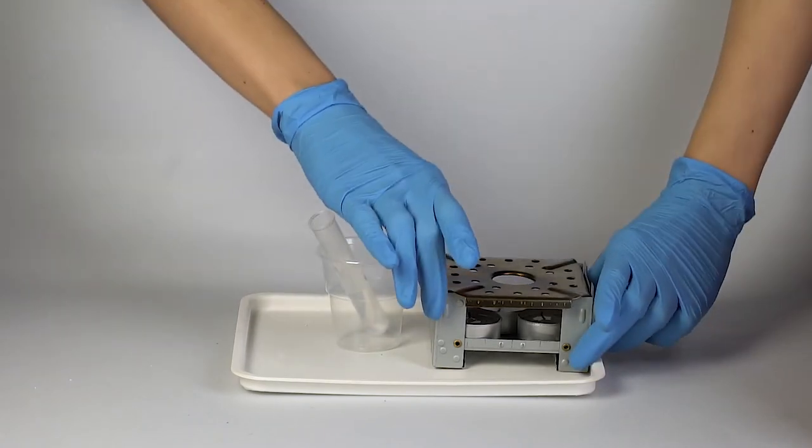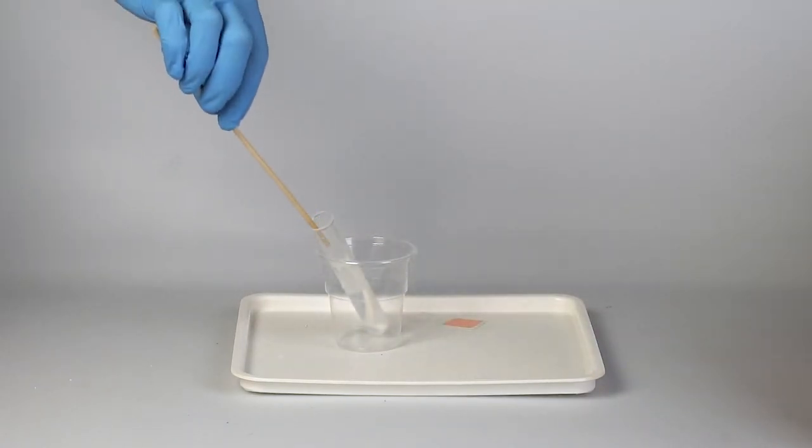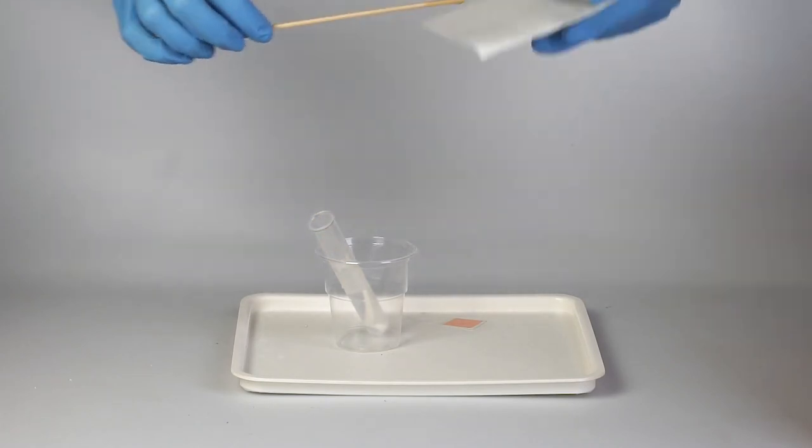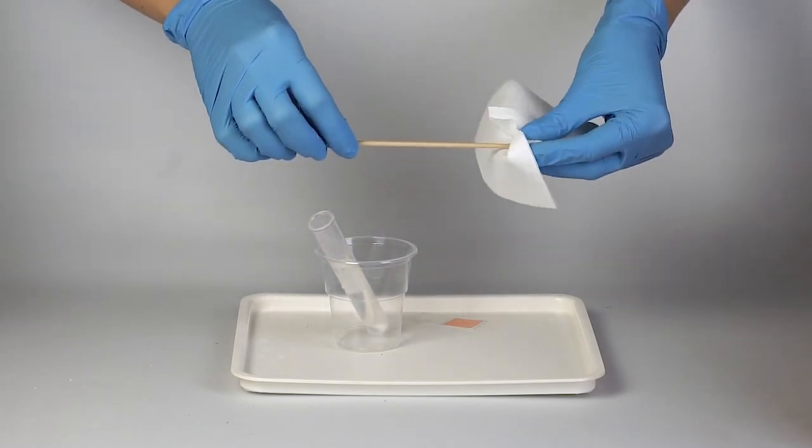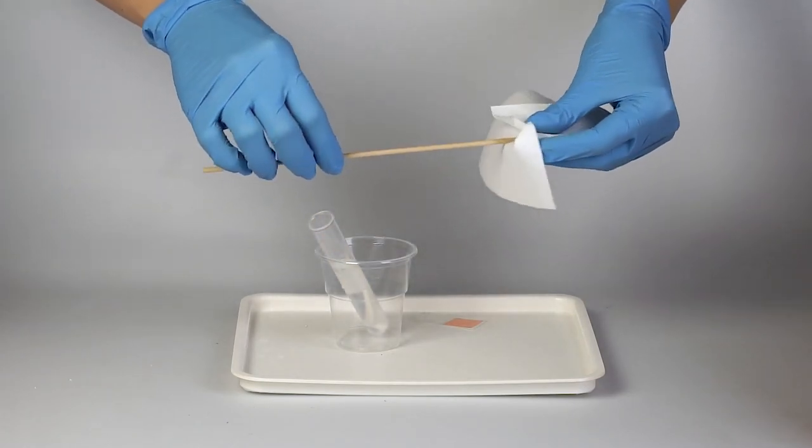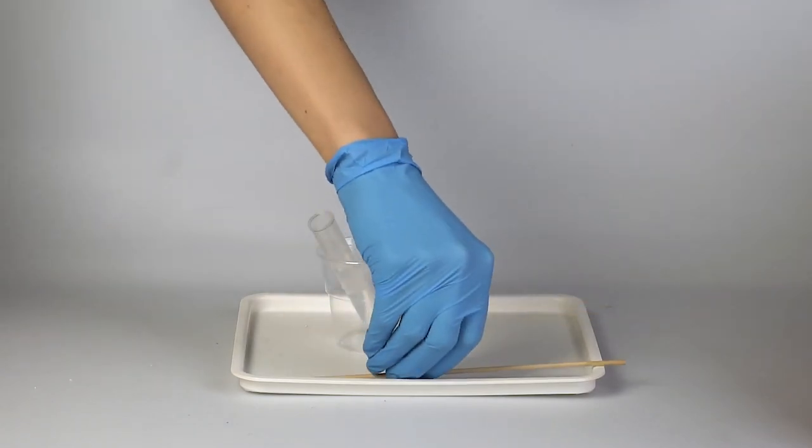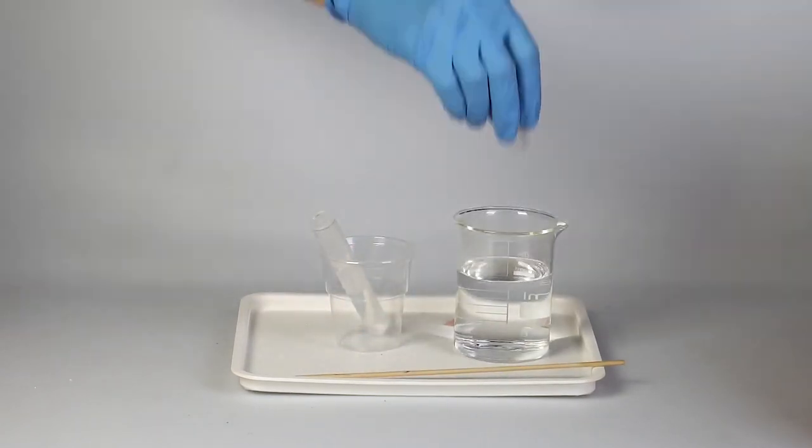Dip the tip of the splint into the solution in the test tube. Lightly pat the tip with a paper towel and put it aside. Wet the rubber stopper with water and close the test tube. Wait 15 minutes.